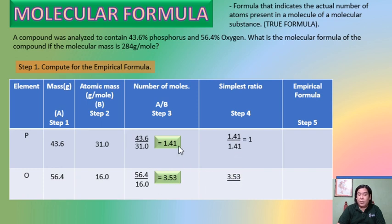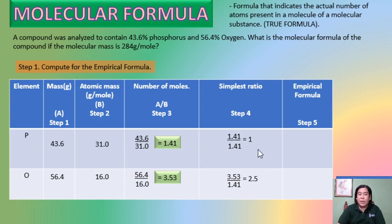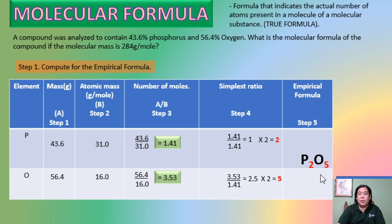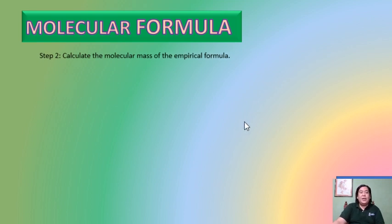Since we got 2.5, we need to find a number that when multiplied by 2.5 gives a whole number. That number is 2. So multiply all ratios by 2: phosphorus becomes 1 × 2 = 2, and oxygen becomes 2.5 × 2 = 5. These become the subscripts of the empirical formula: P2O5, or diphosphorus pentoxide. This is the empirical formula.